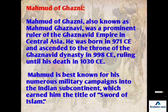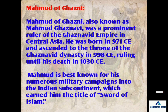Next is Mahmud of Ghazni. Ghazni is a state of Afghanistan, and Mahmud was from an Iranian background, born around 971 CE. He became ruler of the Ghaznavid dynasty and died in 1030 CE. He carried out invasions into India and was given the title 'Sword of Islam.'